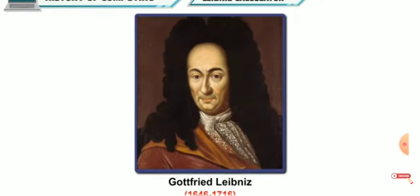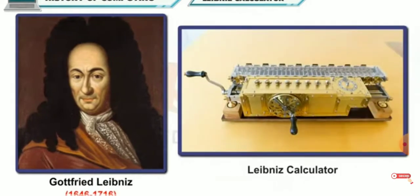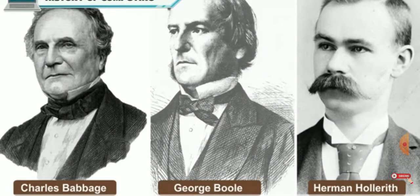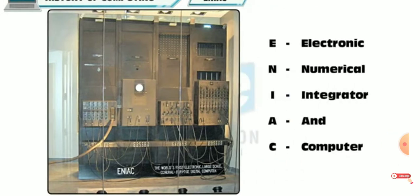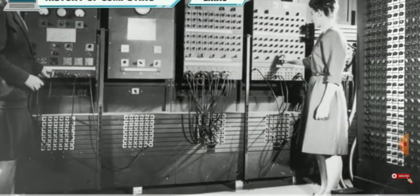Gottfried Leibniz, a German mathematician, modified the Pascal calculator in 1673 and developed a machine called Leibniz calculator. As machines evolved, the great inventors of the modern world worked harder to develop machines which could perform more functions. The first electronic computer was called ENIAC. ENIAC stands for Electronic Numerical Integrator and Computer. It was used for general purposes such as solving numerical problems. ENIAC was invented by J. Presper Eckert and John Mauchly.